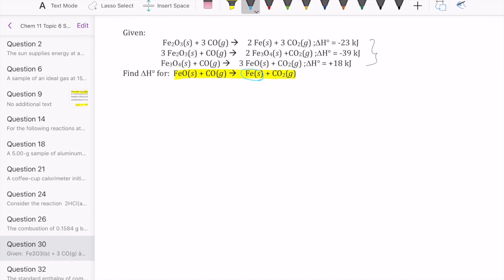So for example, we need to get iron on the product side in the target reaction. If we look at all three reactions we have, the only one that has iron is reaction 1, and it's on the product side, but it has a coefficient of 2, so that means we need to multiply reaction 1 by a half.